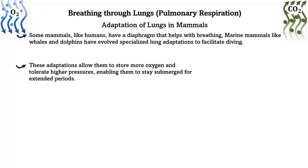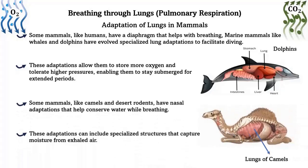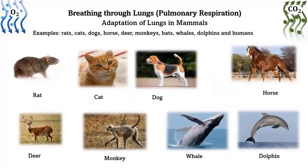Some mammals like humans have a diaphragm that helps with breathing. Marine animals like whales and dolphins have evolved specialized lung adaptations to facilitate diving. These adaptations allow them to store more oxygen and tolerate higher pressures, enabling them to stay submerged for extended periods. Some mammals like camels and desert rodents have nasal adaptations that help conserve water while breathing, including specialized structures that capture moisture from exhaled air. Examples: rats, cats, dogs, horses, deer, monkeys, bats, whales, dolphins, and humans.